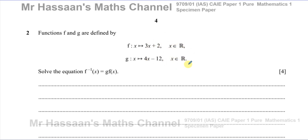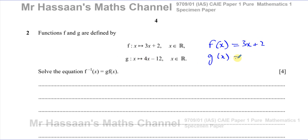Any number can be put into these two functions. This is basically the same as saying f of x equals 3x plus 2 — it's just another way of writing this down. And this is the same as saying g of x is equal to 4x minus 12. There's no difference between these whatsoever; they are actually the same thing.